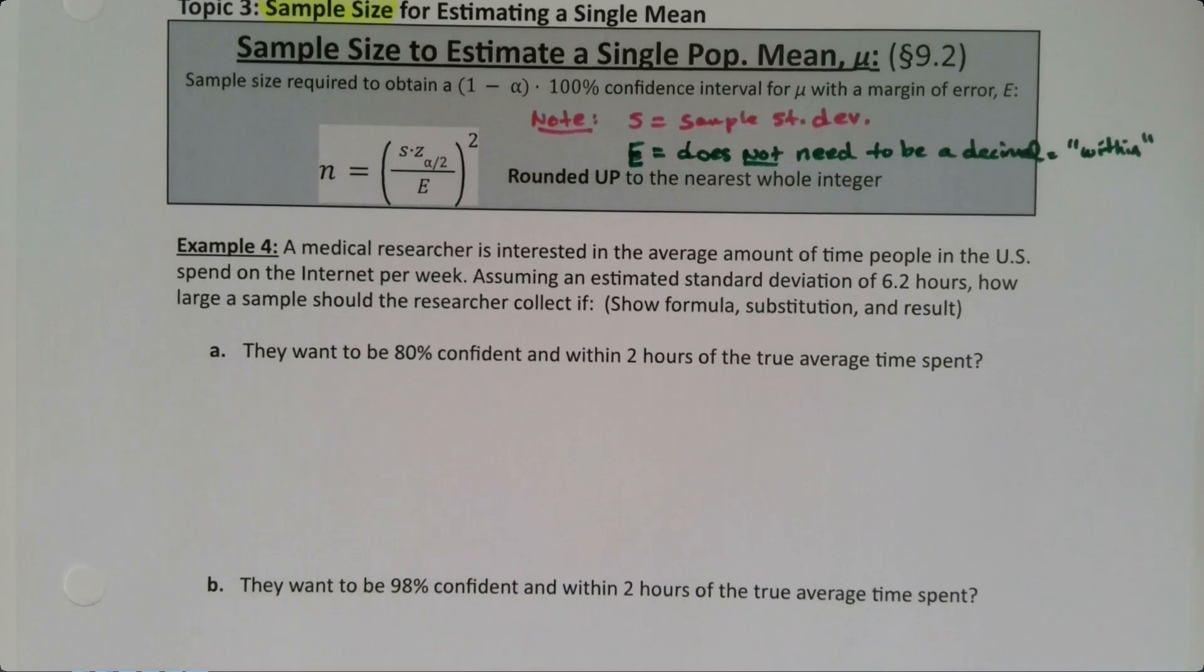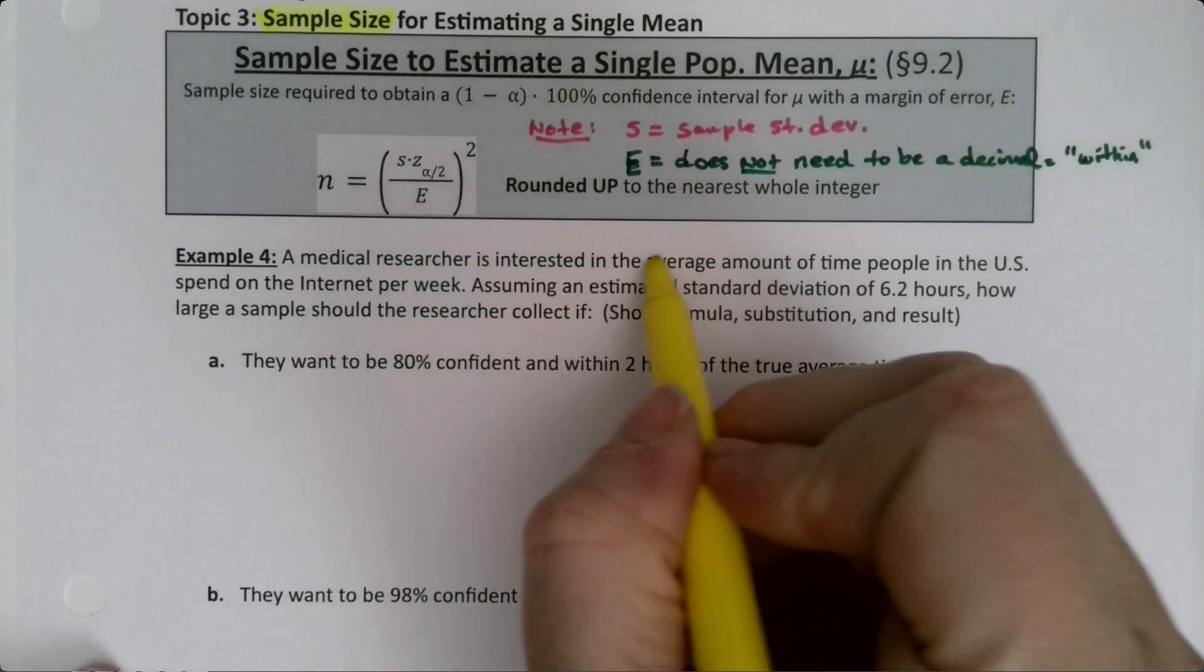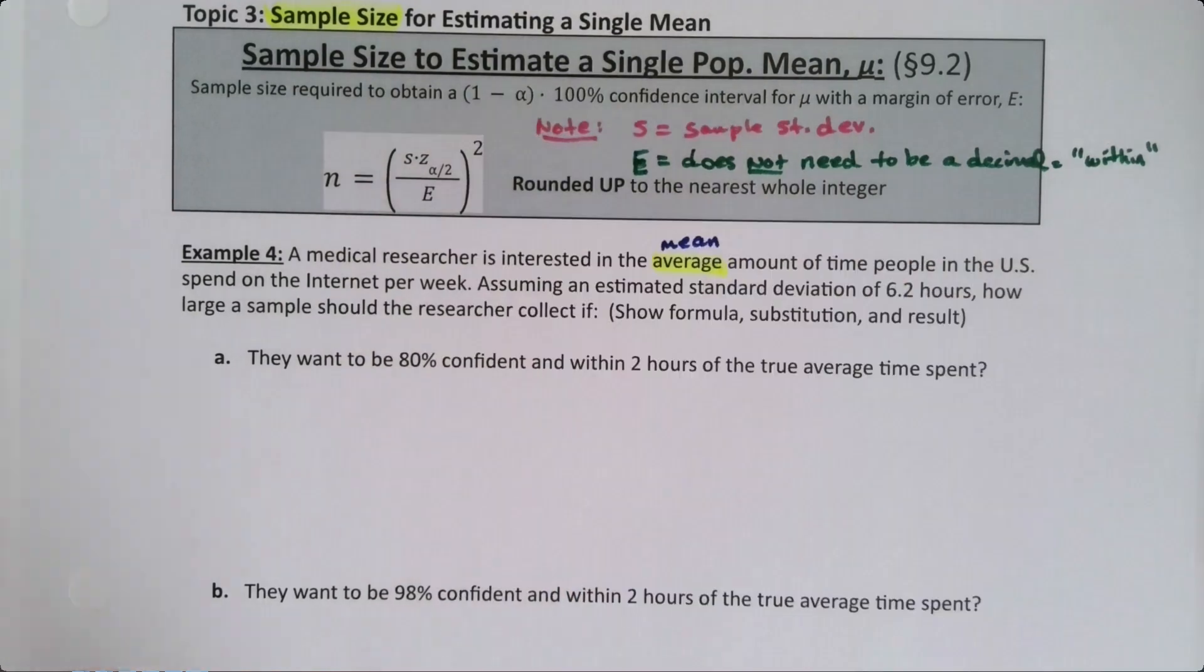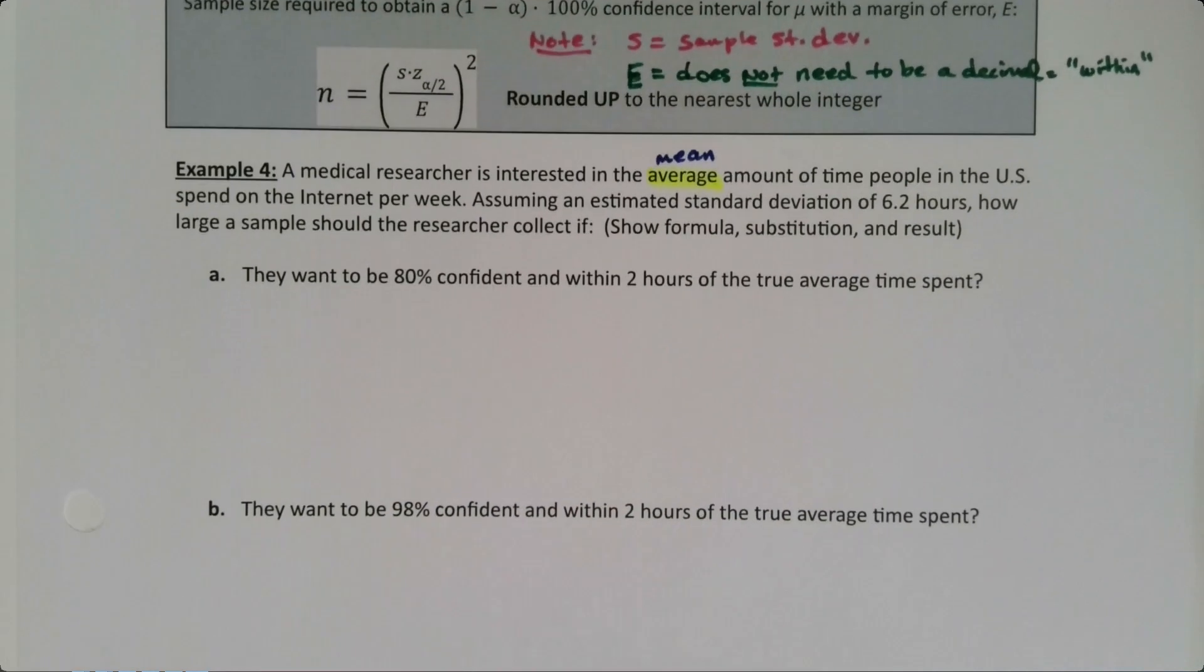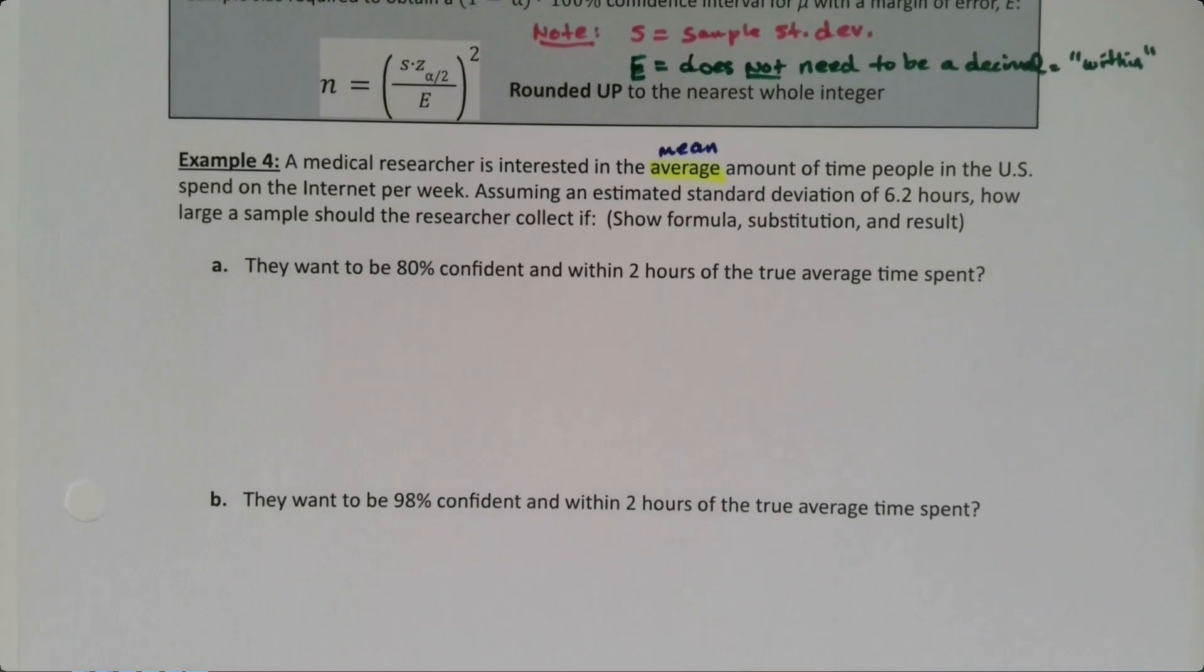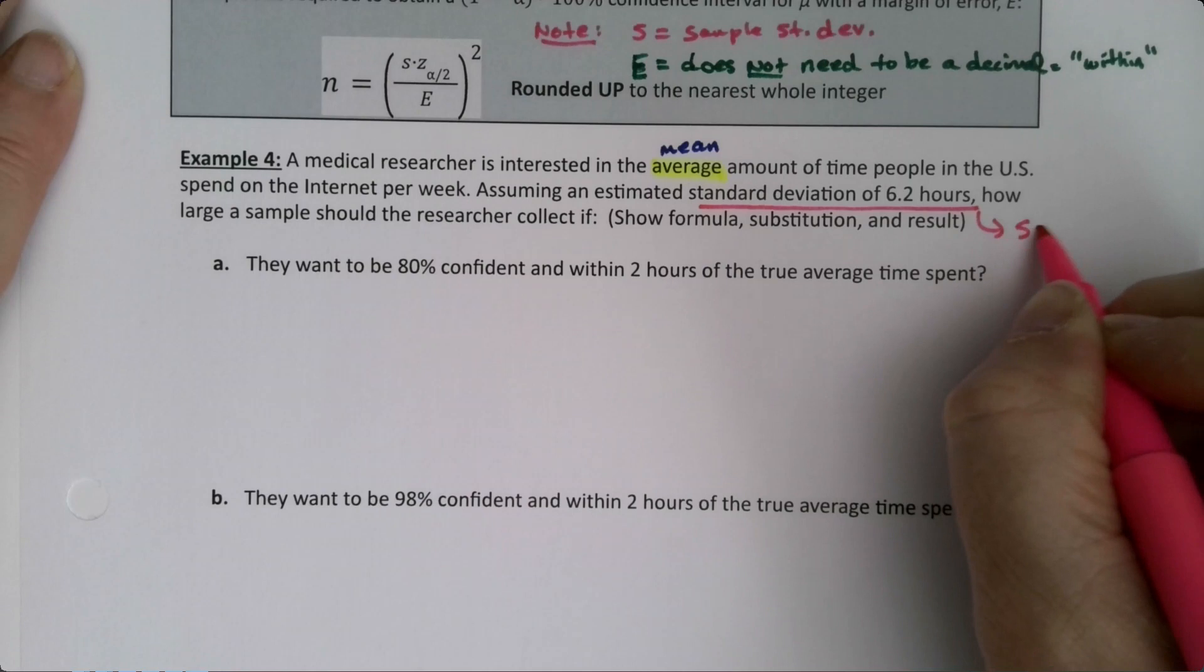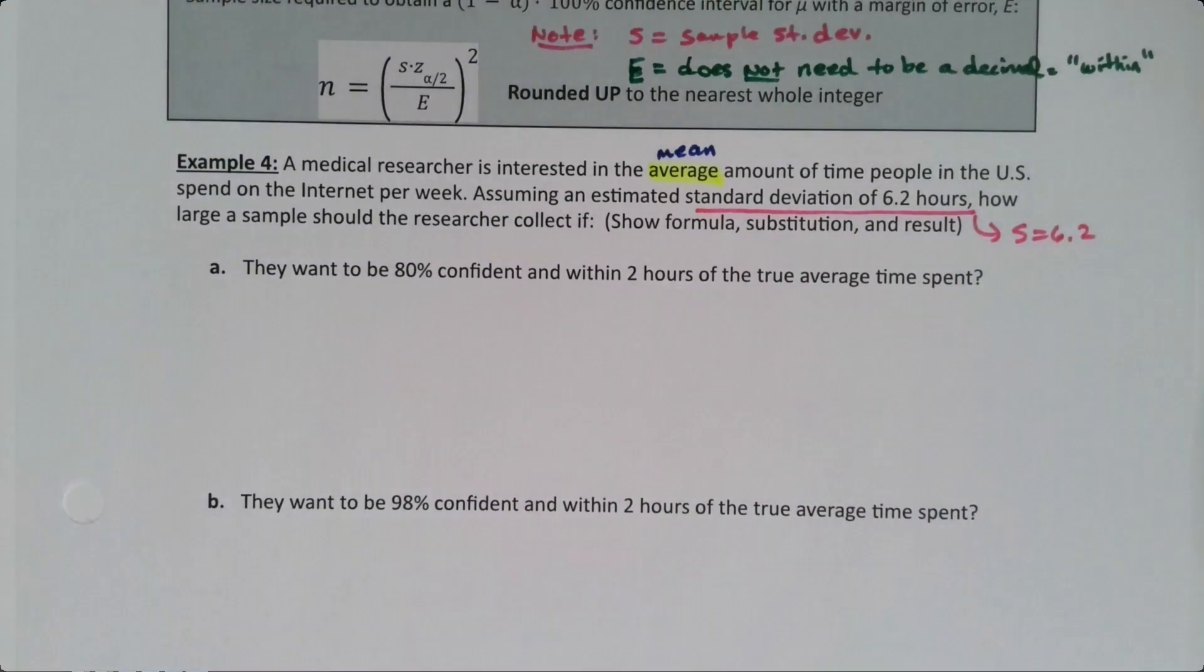A medical researcher is interested in the average amount. Okay, so right there. I see that this is talking about average, so that means that it's talking about the mean. Right, that means that I know I'm in this section, not the previous page, which was all about proportions, right, percentages. So it's interested in the average amount of time people in the U.S. spend on the internet per week. Assuming an estimated standard deviation of 6.2 hours, well, there we have it. There's standard deviation. So they're telling us that S is 6.2. How large a sample should the researcher collect if? And then we have different scenarios.